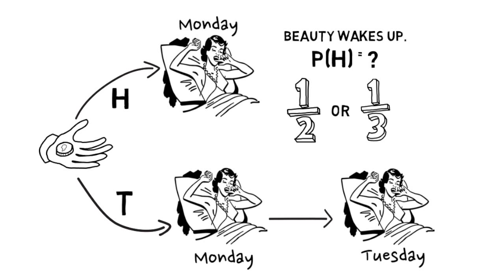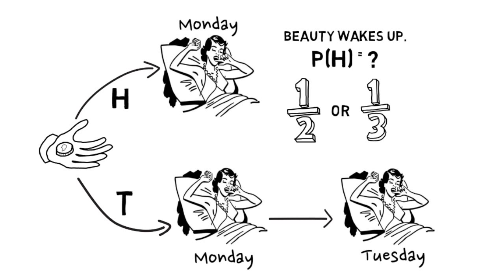So the halfers and the thirders have fought bitterly over this problem. There's no consensus solution, and you probably think that it's obvious which the right answer is. However, rest assured that there are other people who are similarly confident that their answer is the right one — and it disagrees with yours.